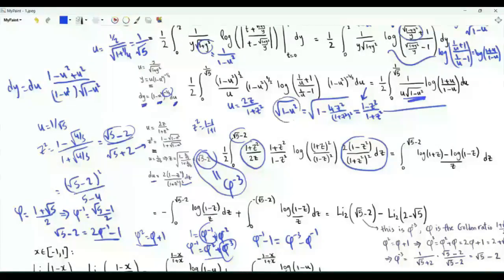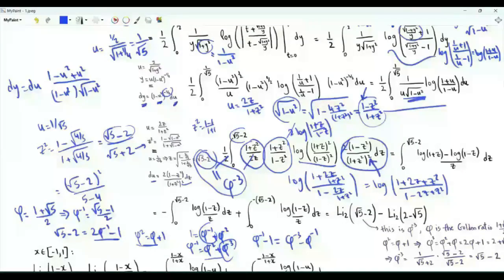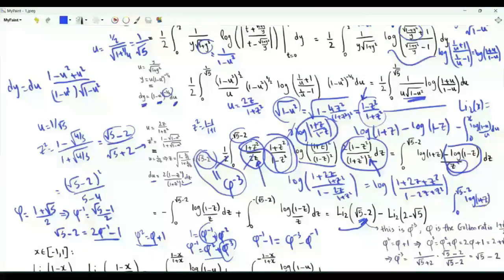With this substitution: 1/u = (1 + z²)/(2z), 1/√(1−u²) = (1 + z²)/(1 − z²), and log((1+u)/(1−u)) becomes log((1 + 2z/(1+z²))/(1 − 2z/(1+z²))) = log((1 + 2z + z²)/(1 − 2z + z²)) = log((1+z)²/(1−z)²) = 2 log((1+z)/(1−z)). The twos cancel and we get the integral from z = 0 to √5 − 2 of (log(1+z) − log(1−z))/z. The dilogarithm part from log(1−z)/z gives −Li₂(√5 − 2); and from log(1+z)/z by replacing z → −z we get −Li₂(2 − √5).